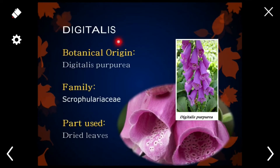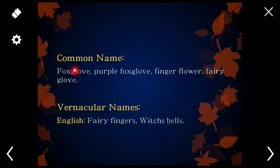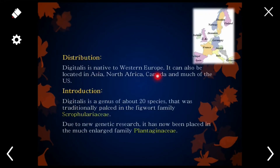The first example of a cardenolide is Digitalis. The botanical name is Digitalis purpurea — 'purpurea' meaning purple, as the plant has purple flowers. The family is Scrophulariaceae (also called Plantaginaceae), and the part used is the leaves. It is widely distributed in western Europe and also found in Asia, North Africa, Canada, and much of the US. About 20 species are available.